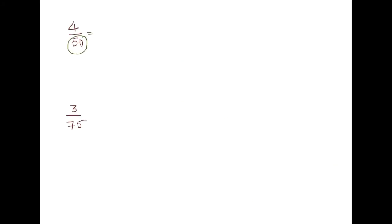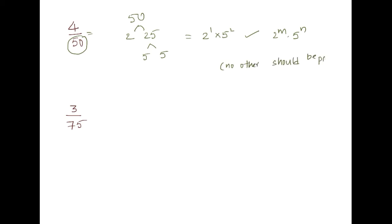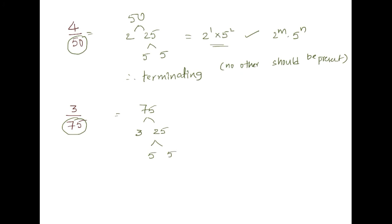Next: 4 by 50. Prime factors of 50: 2 into 25, and 25 is 5 into 5, so 3^1 into 5^2. Since it is not of the form 2^m into 5^n — only 2s and 5s are allowed — it is non-terminating, or repeating.